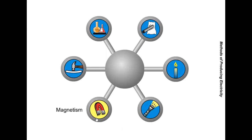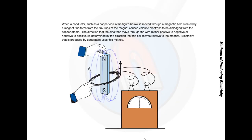Magnetism. When a conductor, such as a copper coil, is moved through a magnetic field created by a magnet, the force from the flux lines of the magnet cause valence electrons to be dislodged from the copper atoms. The direction that the electrons move through the wire is determined by the direction that the coil moves relative to the magnet. Electricity that is produced by generators uses this method.